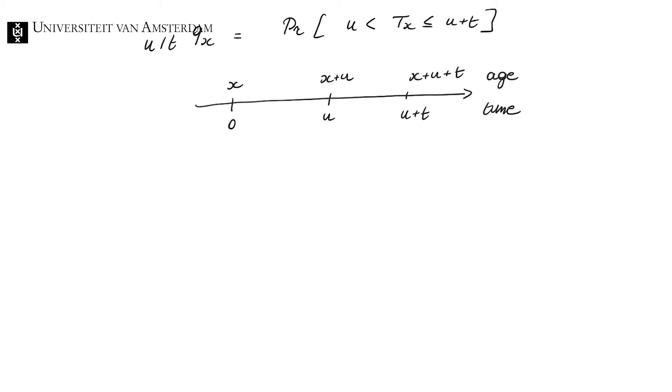So one way how we can evaluate this expression is by saying, well, what is the probability that x will die over the red interval minus the probability that x will die in the blue interval.